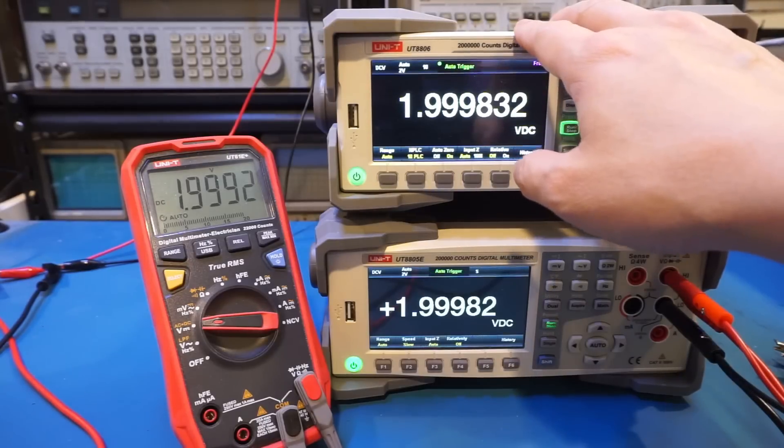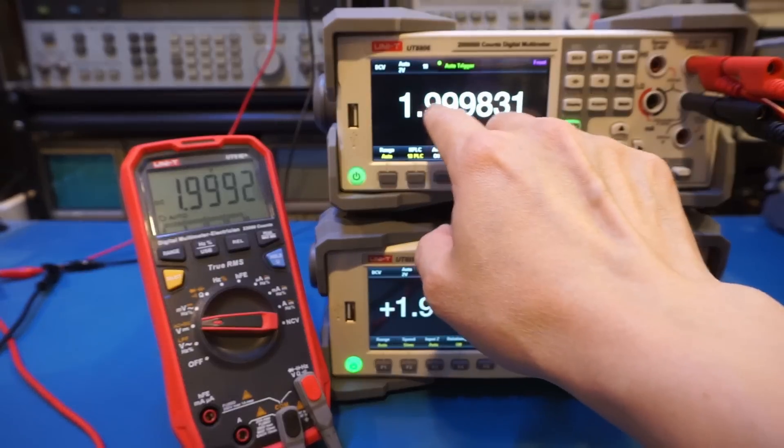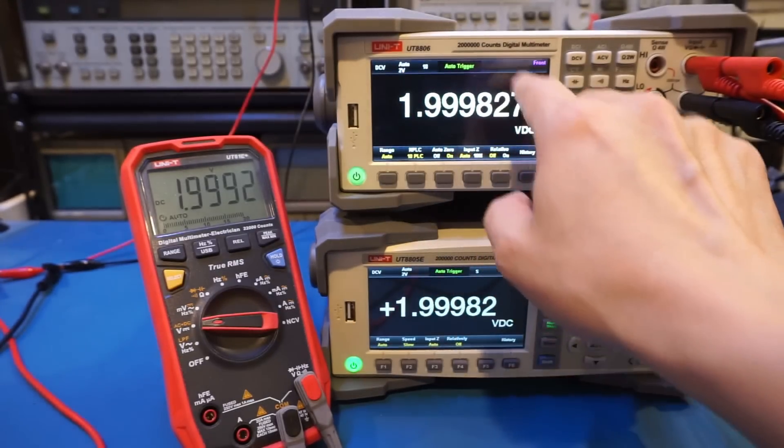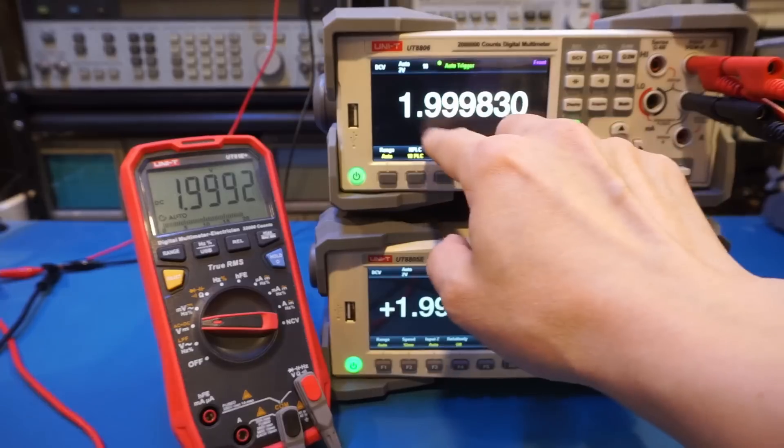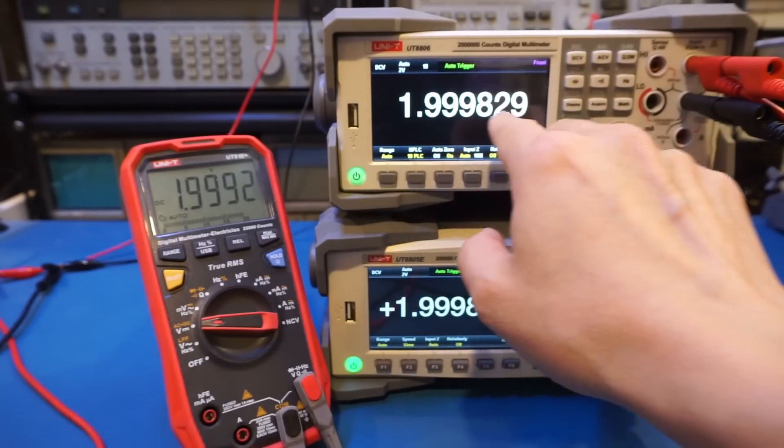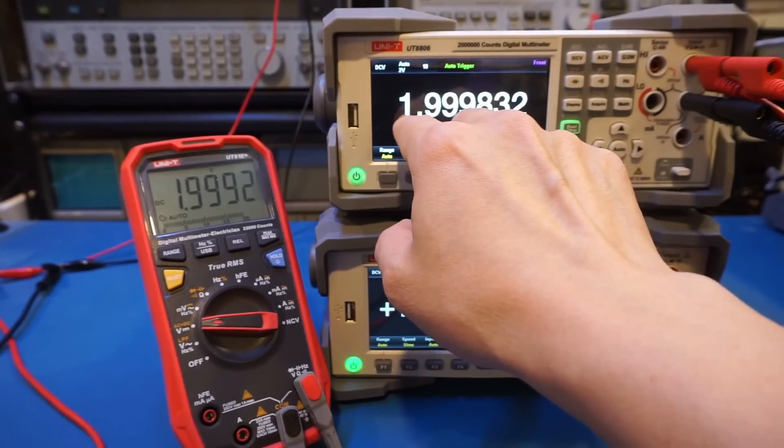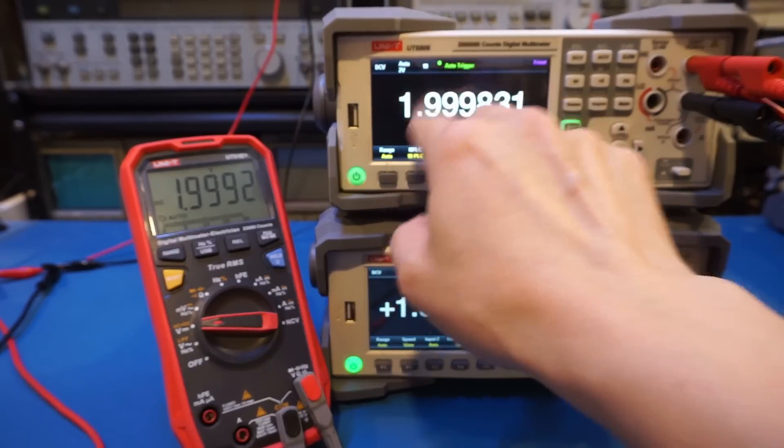Similarly, on the 6.5-digit meter, we have six full digits. You can see 1, 2, 3, 4, 5, 6. These digits are all capable of displaying between 0 and 9. And then we have this leading digit that is currently 1, and that is the half digit.